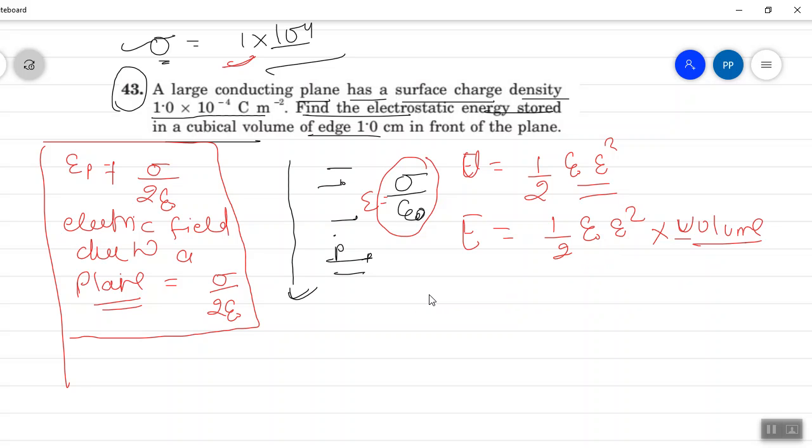We know one by two epsilon naught electric field square, which is sigma square by epsilon square, into volume. And this is one centimeter, one into ten to the power minus two cubic volume.